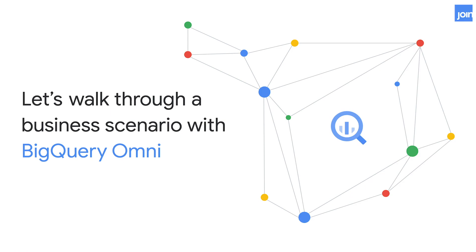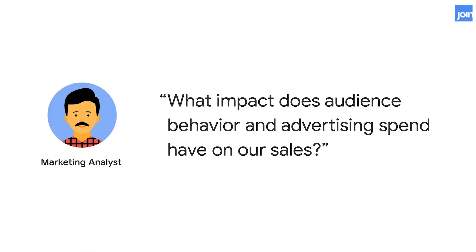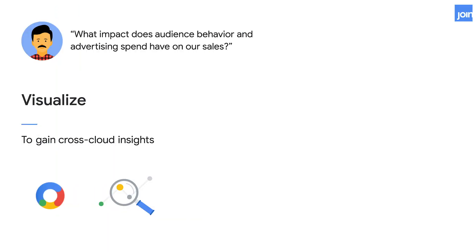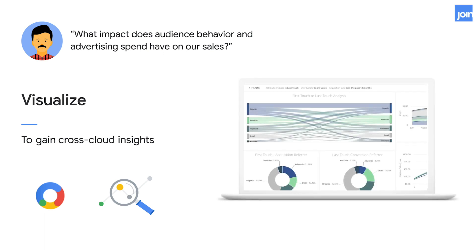So let's talk about how you can use BigQuery Omni to make data-driven decisions. Starting with a marketing analyst use case: what impact does advertising behavior and spend have on our sales? It sounds like a question that should be pretty straightforward — just build a dashboard. But it's actually crazy hard to have a dashboard with KPIs that come from a bunch of different sources. With BigQuery Omni, we'll use the power of visualization for cross-cloud insights with a Looker dashboard pulling in data from GCP — your marketing side — and your sales side, which lives on AWS.